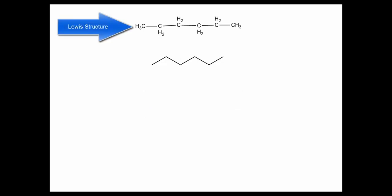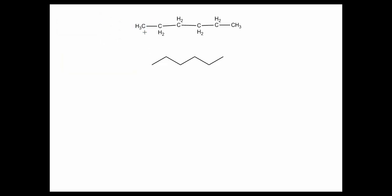Here I show the Lewis structure and below that the line-angle diagram. In a line-angle diagram, on each end and each bend there is a carbon. The hydrogens and carbons are not shown explicitly — the end of a line segment represents a carbon atom.